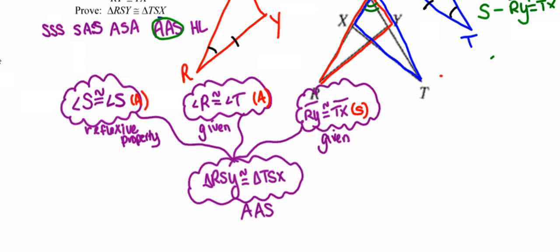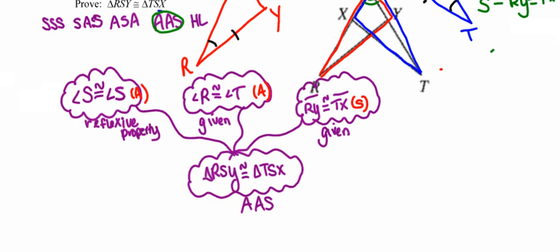In a lot of ways this is very similar to many of the proofs we've been writing all along. The only real difference here is that you have to separate the triangles and really focus on looking for those pairs of congruent overlapping angles when necessary.